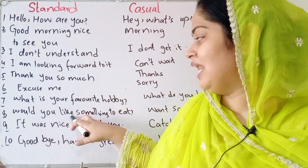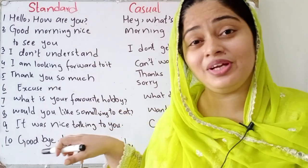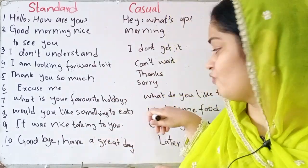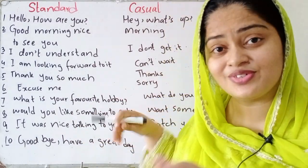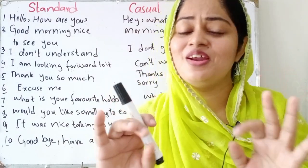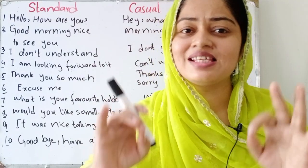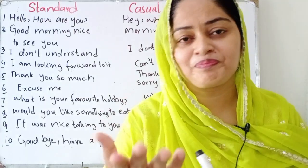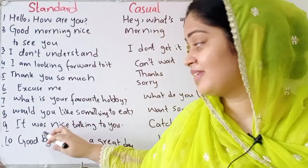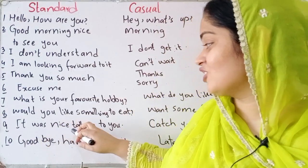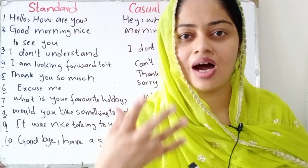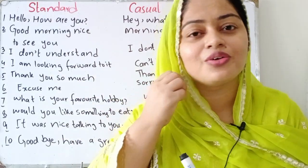Eighth: 'Would you like to eat?' or 'Would you like something to eat?' is standard, and the casual sentence is 'Want some food?' — that's the basic, informal, and most repeated casual sentence. Ninth: 'It was nice talking to you' is standard, and the casual version is 'Catch you later.'